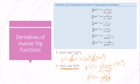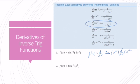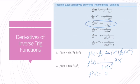For the second function, I have the derivative of the inverse tangent of x squared. Using the chain rule, the derivative of arctan is 1 over 1 plus x squared. So f prime of x equals 1 over 1 plus x squared squared, times the derivative of x squared which is 2x. The derivative becomes 2x over 1 plus x to the fourth.